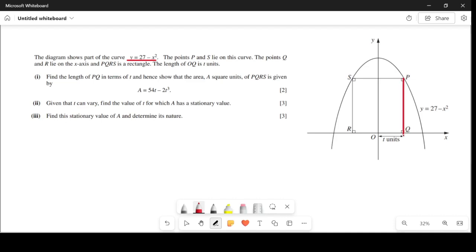We need this length in terms of t, and this length is going to be the value of y here. The value of y is dependent on this equation. For example, if x were 2 here, then this value of y would be 27 minus 2 squared.